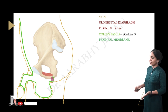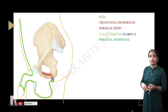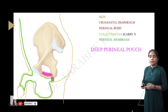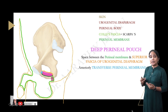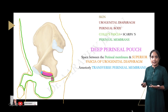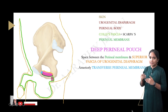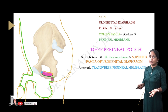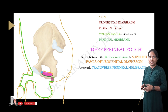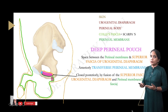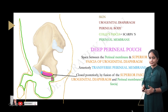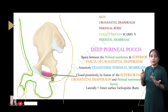The deep perineal pouch is located between the perineal membrane below and the superior fascia of the urogenital diaphragm above, and it basically contains the muscles of the urogenital diaphragm, including both fascial boundaries. Anteriorly it is limited by the transverse perineal ligament, and posteriorly it is closed by the fusion of the superior fascia of the urogenital diaphragm and the perineal membrane. Therefore, the deep perineal pouch is a completely closed compartment.